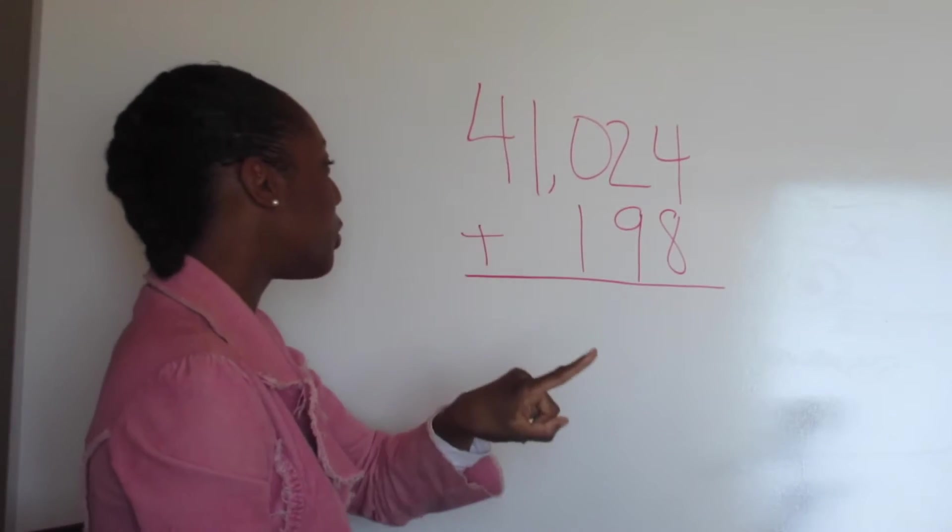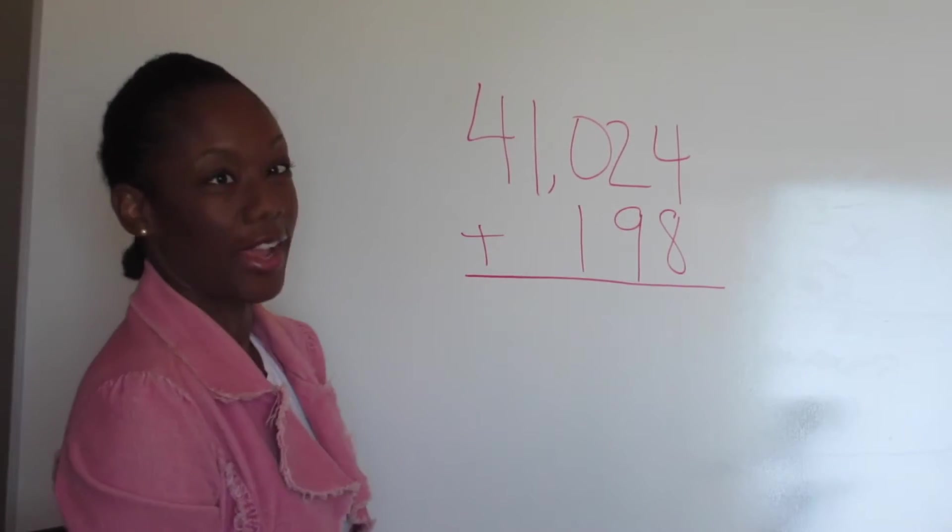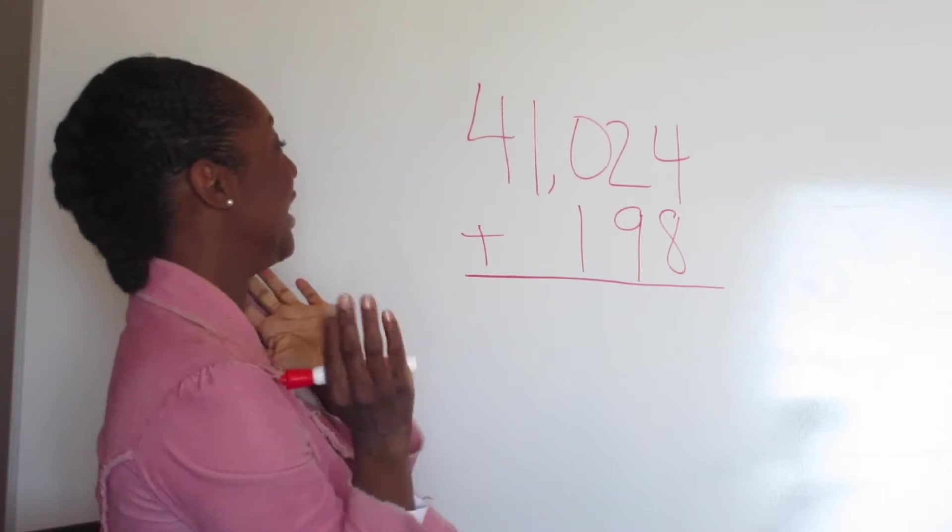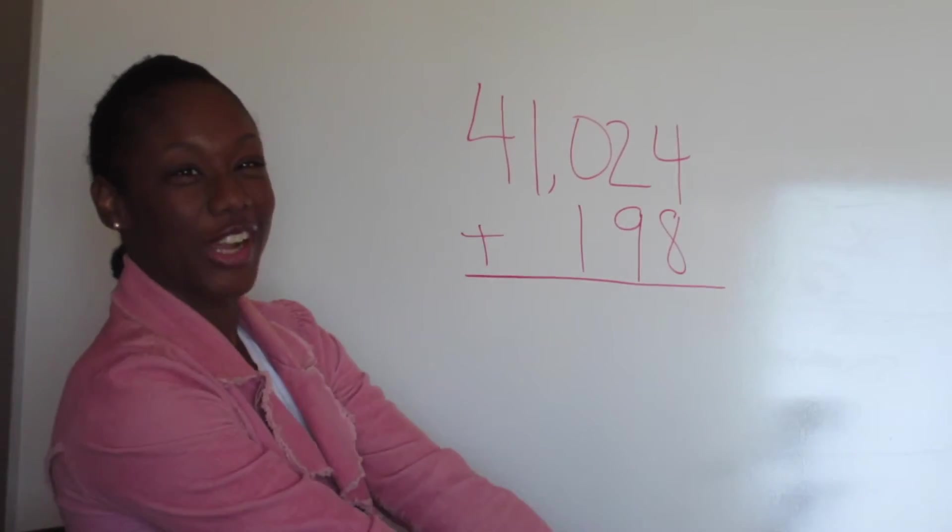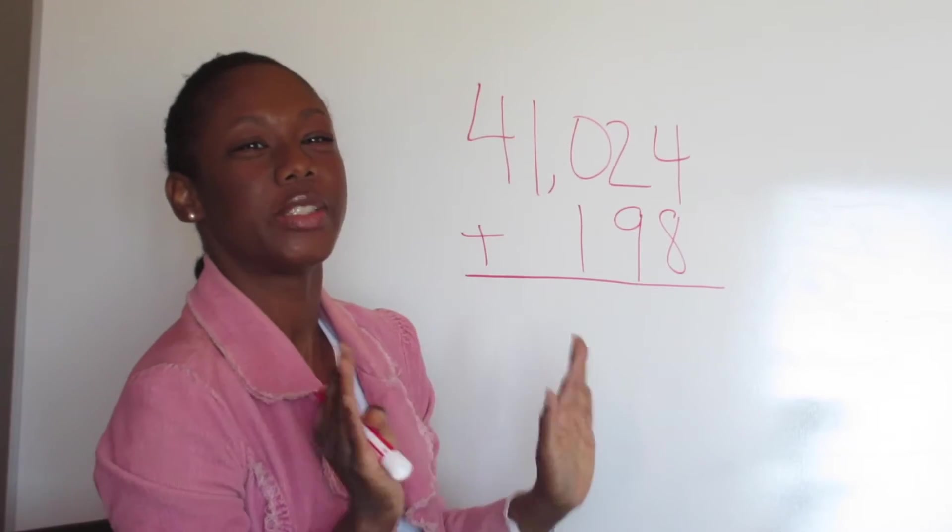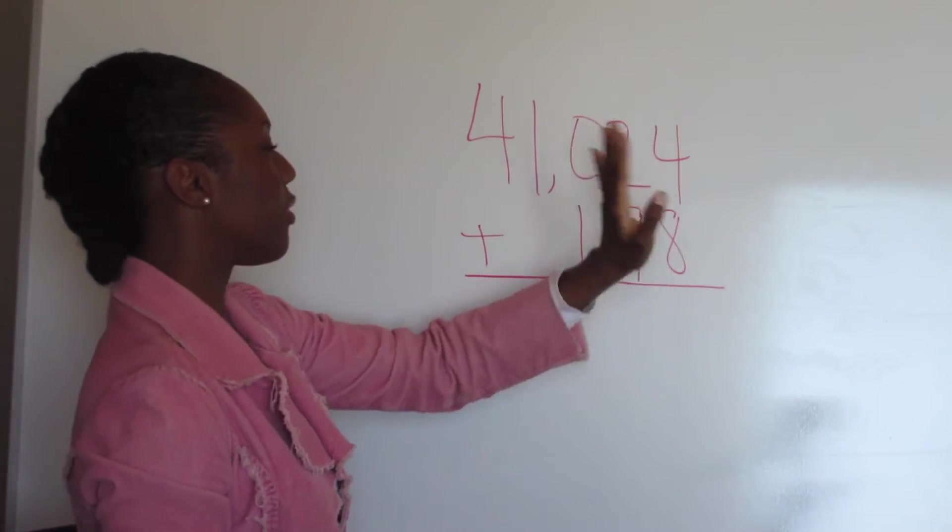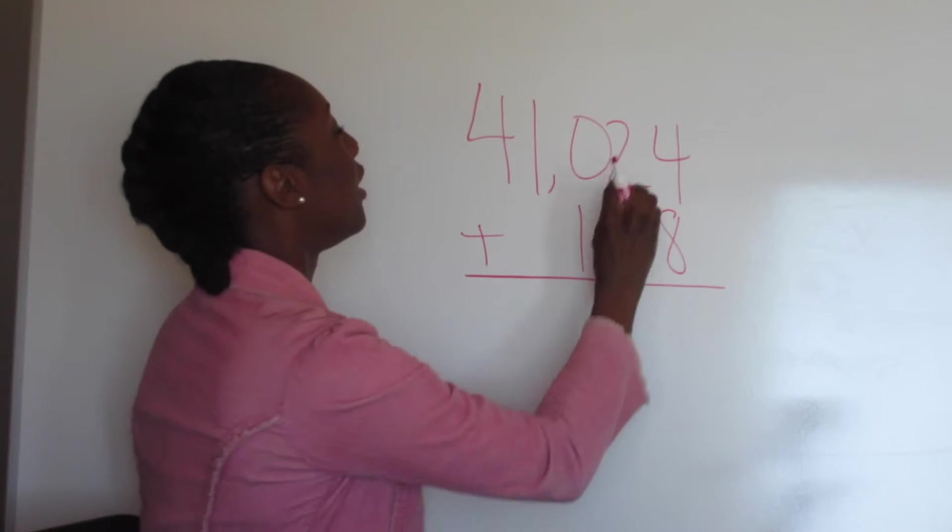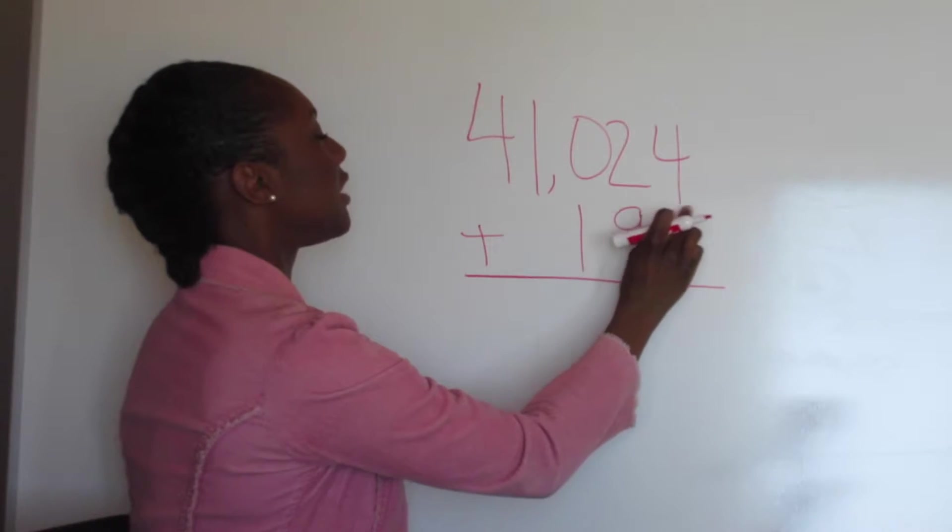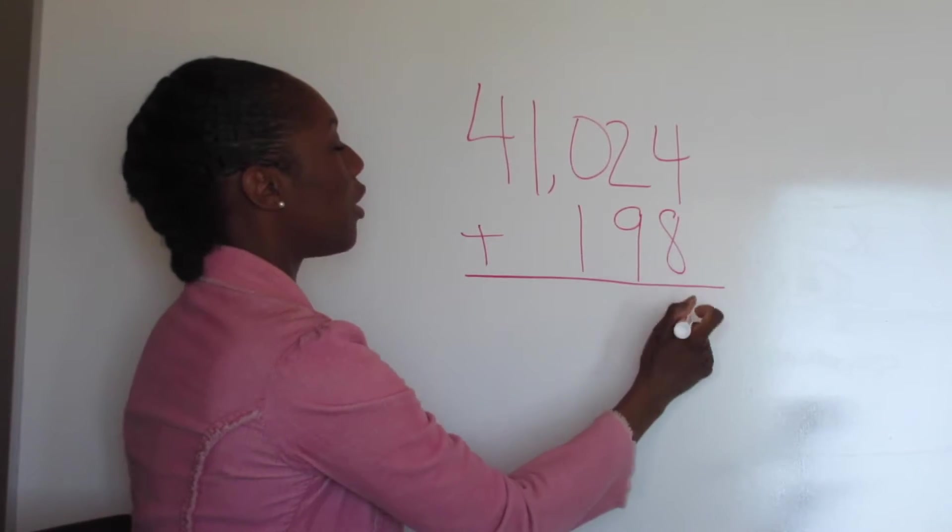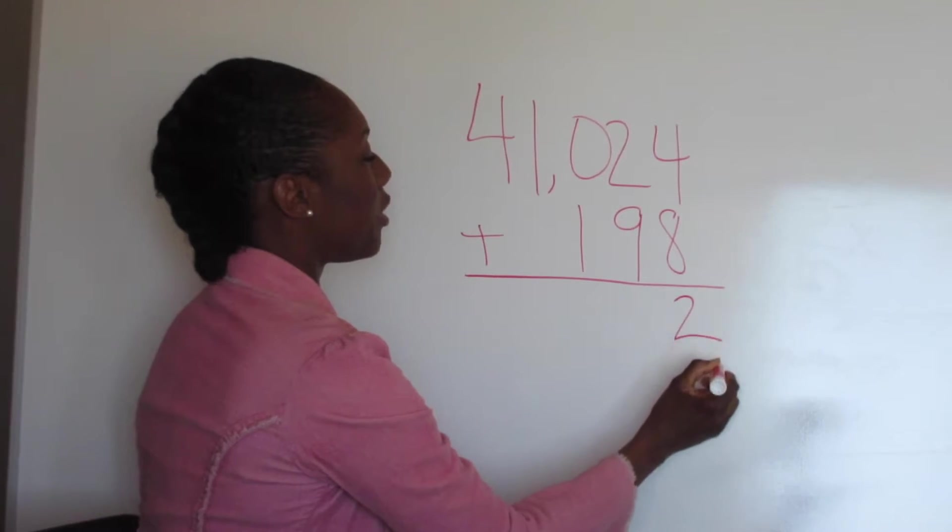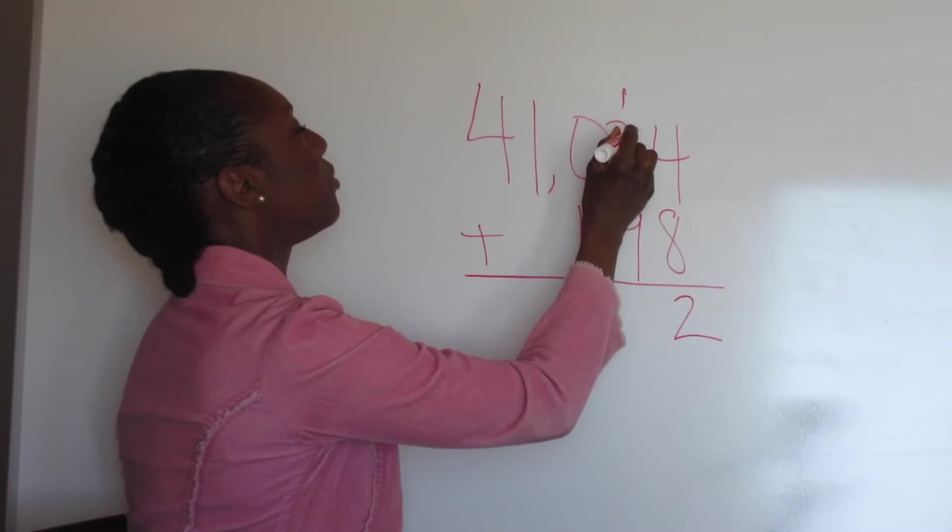41,024 plus 198. Seems like a lot of numbers, right? But it's not because we start with the number on the right and then work our way to the left. Start with the first number 4 plus 8. So we start with 4: 5, 6, 7, 8, 9, 10, 11, 12. So we put the first number, just 2 and then 1. Carry the 1.